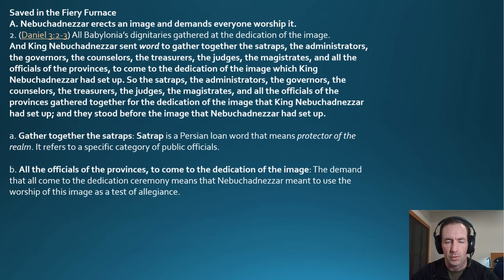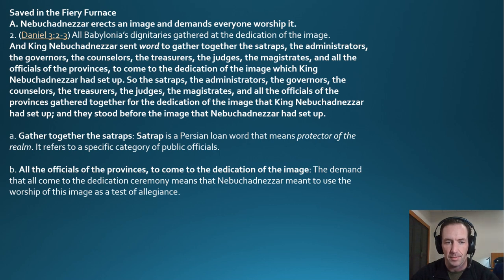King Nebuchadnezzar sent word to gather together the satraps, the administrators, the governors, the counselors, the treasurers, the judges, the magistrates, and all the officials of the provinces to come to the dedication of the image which King Nebuchadnezzar had set up.